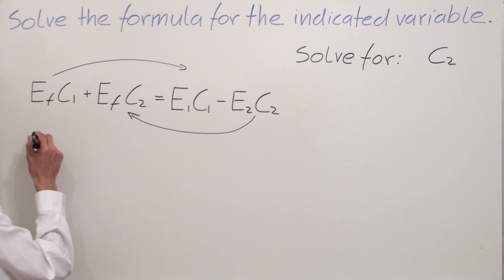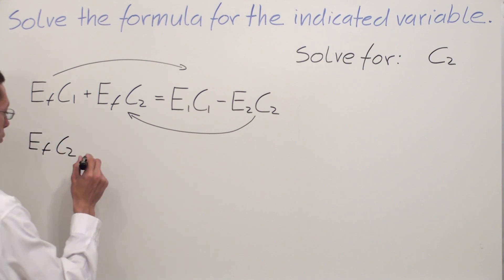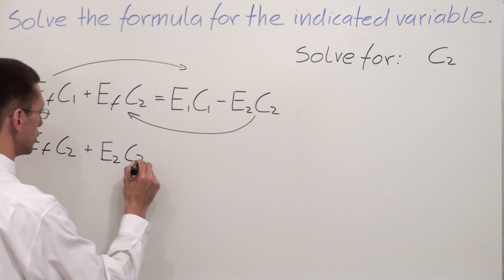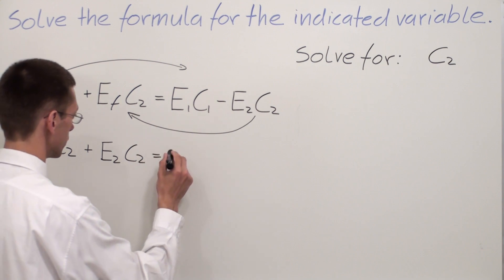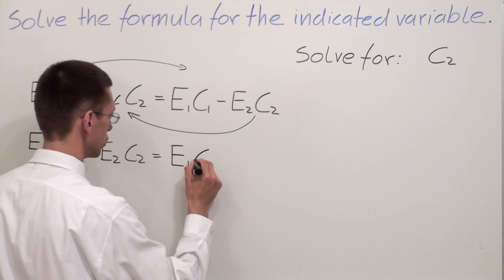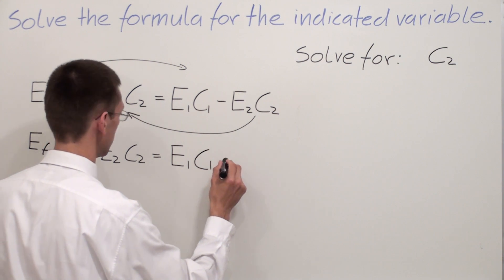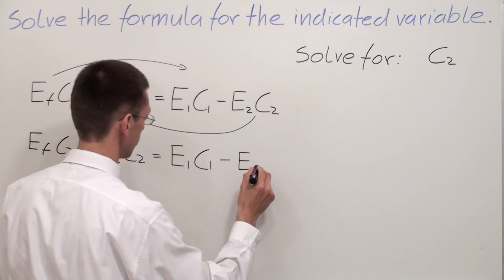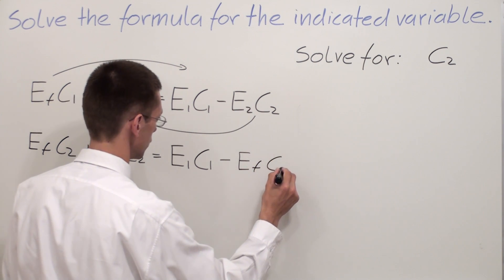I'm going to end up with this form: EF C2 plus E2 C2 equals E1 C1 minus EF C1.